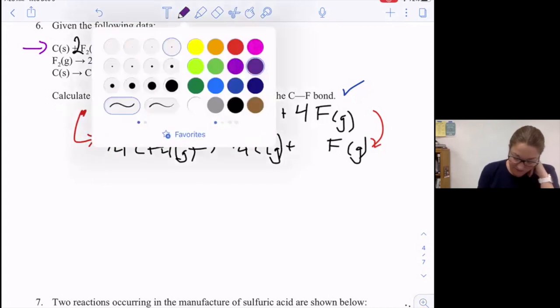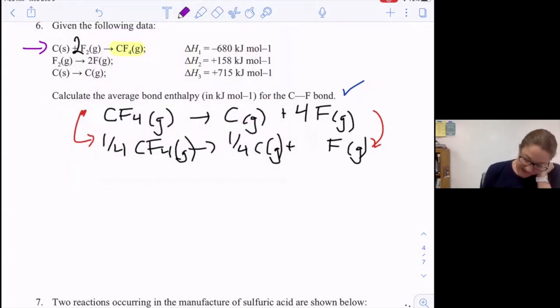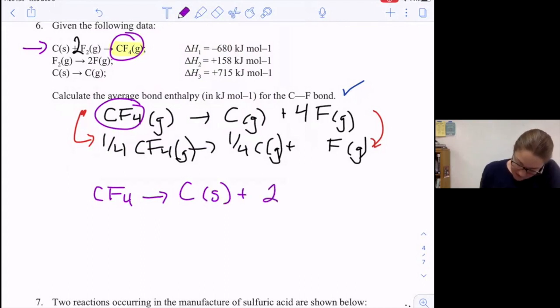Okay, so taking a look at my first reaction, what does it have in common with the goal? CF4. Correct number? Yes. Correct side? No. So I'm going to reverse it. CF4 becomes carbon solid plus 2F2 gas. Reversing the reaction means I change the sign.